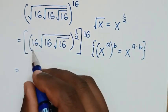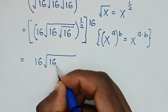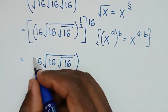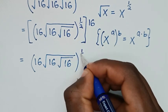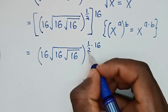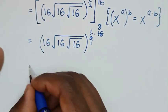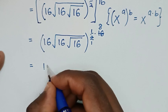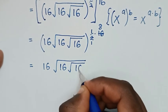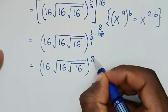So into here, it will be 16, square root of 16, under square root of 16, then bracket, this power of a half times power of 16. To simplify, this will cancel: 1 and 8. So it will be equal to 16, square root of 16, under square root of 16, then bracket, 1 times 8, it is 8.